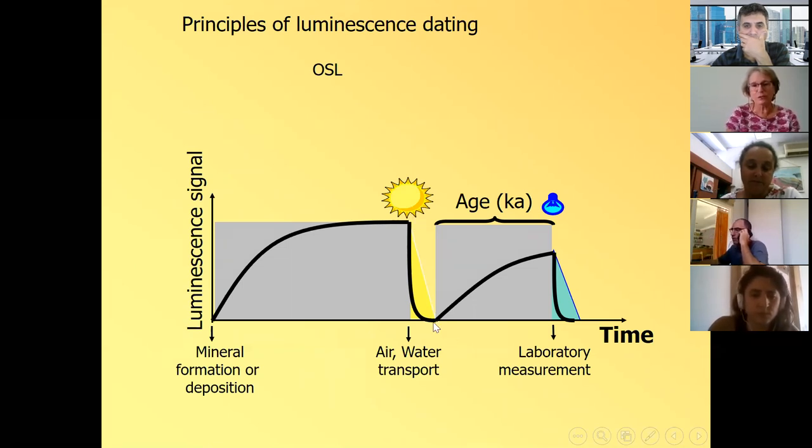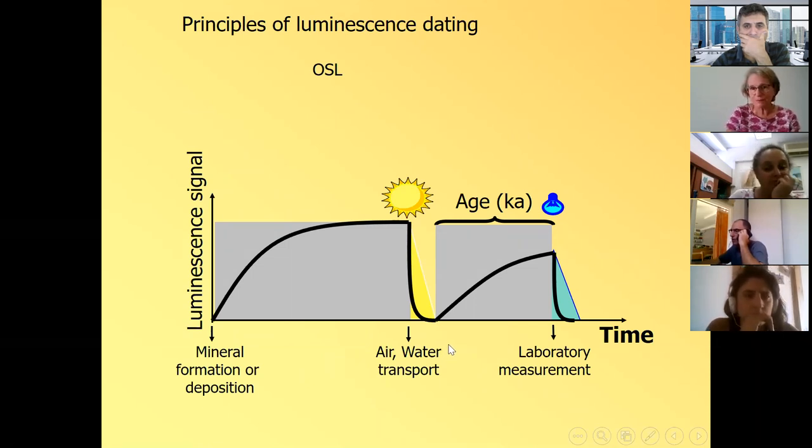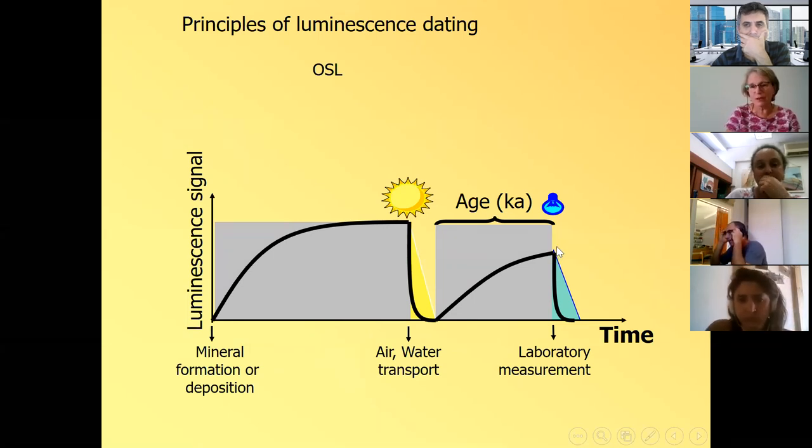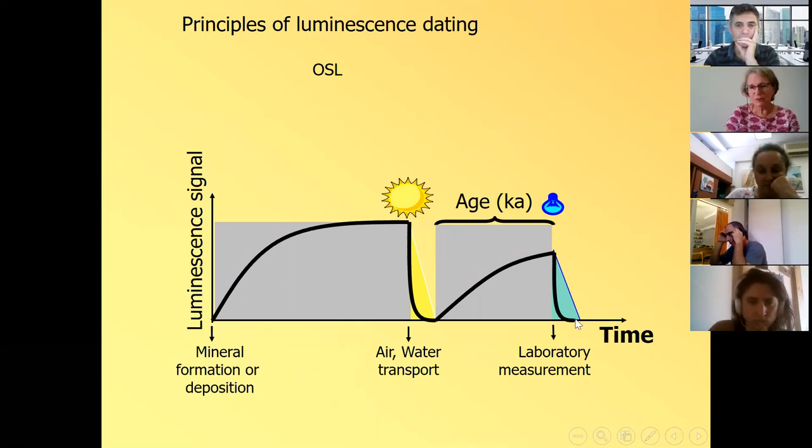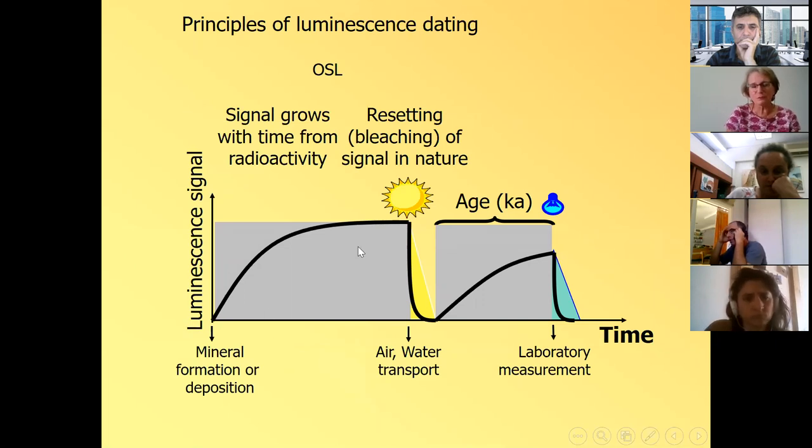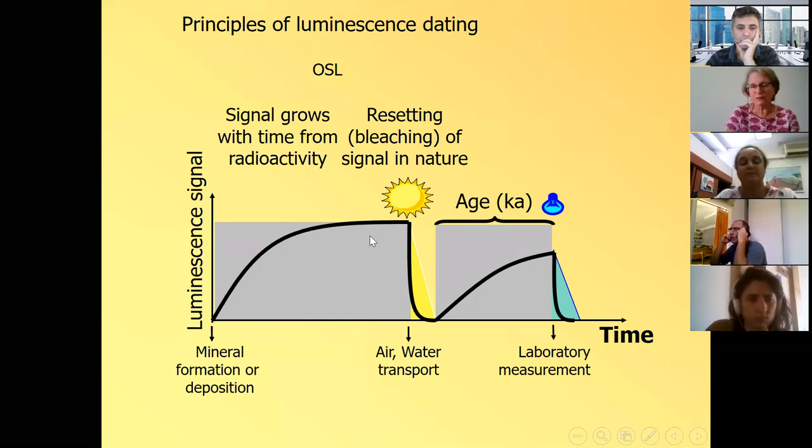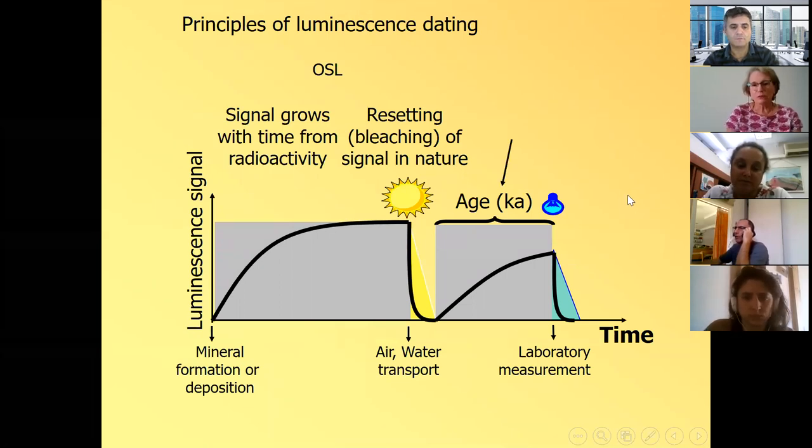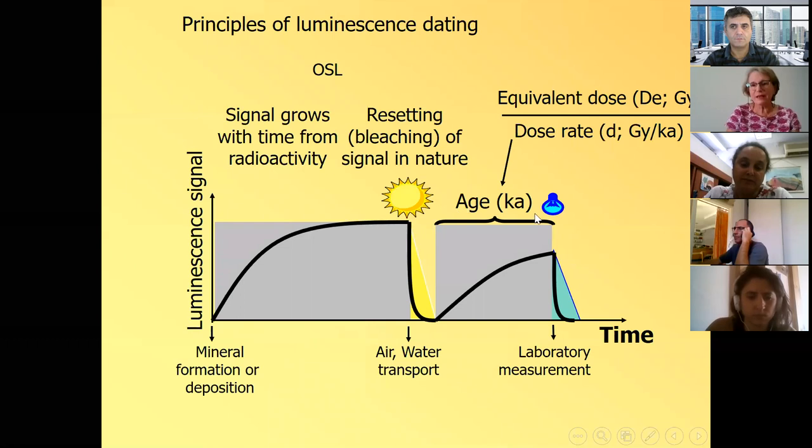And then something happened and this grain is exposed to sunlight. And the luminescence signal that has accumulated since the beginning is reset or bleached or zeroed very rapidly in a very short time. And this is carried out during the transport by air, by water and exposure to the sunlight. And after burial again, say in a sand dune or in an archaeological site, this quartz grain starts accumulating the signal again.